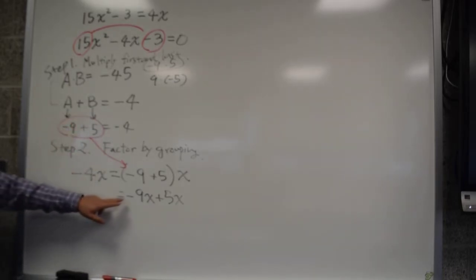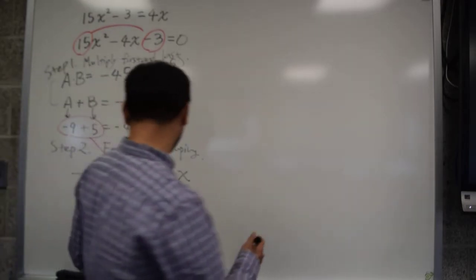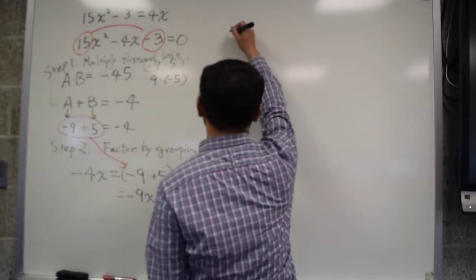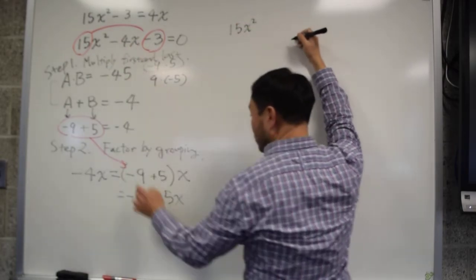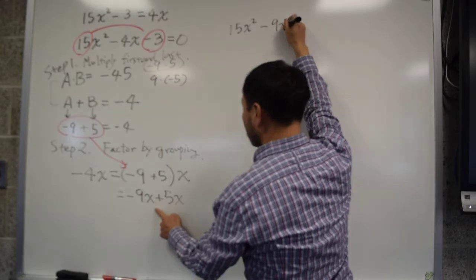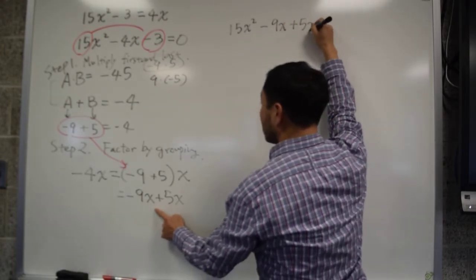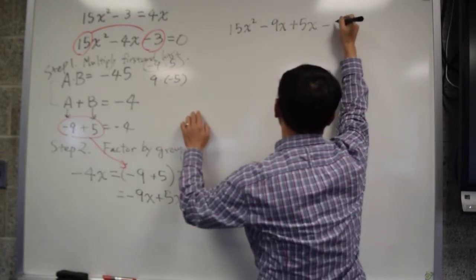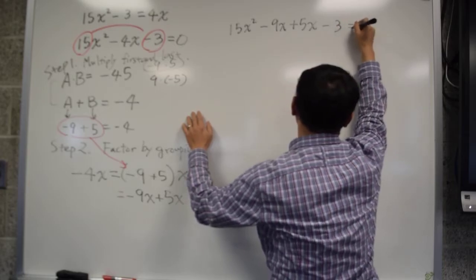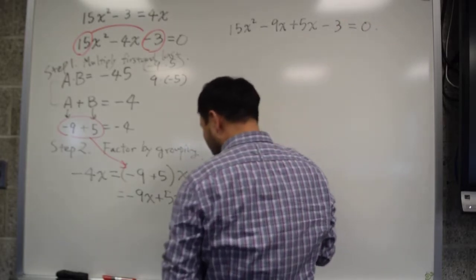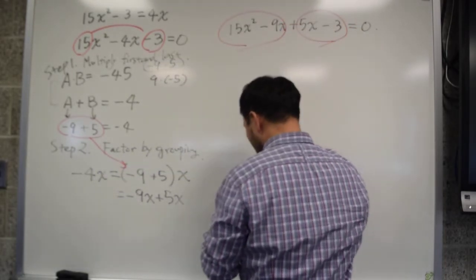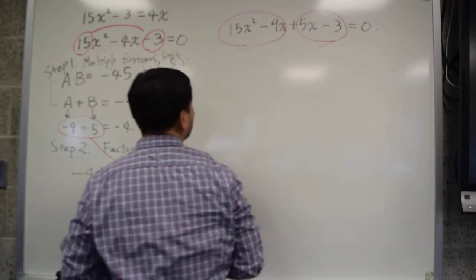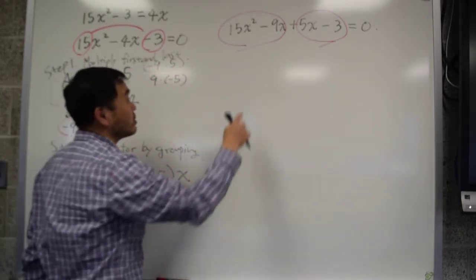Those are two steps. And then once you do this, then you can actually do something called factor by grouping. Let me show you how it works. So you write down 15x squared. Instead of negative 4x, you put negative 9x plus 5x and then minus 3 equal to 0. And the factor by grouping means you group the first two, you group the second two, and you factor individually as much as you can.